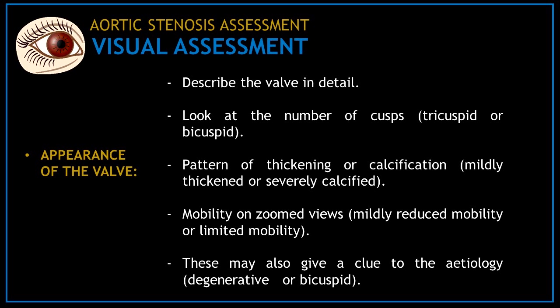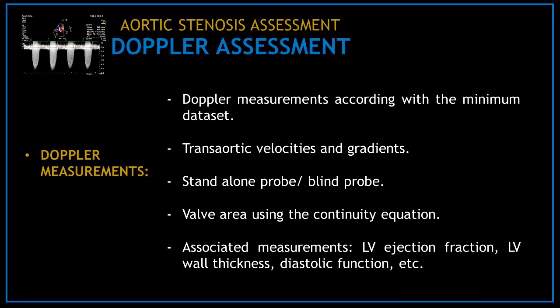The visual assessment of aortic stenosis means describing the valve in detail and commenting on its appearance. Look at the number of cusps — is the valve tricuspid or bicuspid? Comment on the pattern of thickening or calcification — is the valve mildly thickened or severely calcified? Assess the mobility on zoomed views. Answering these questions may also give you a clue to the etiology of the aortic stenosis.